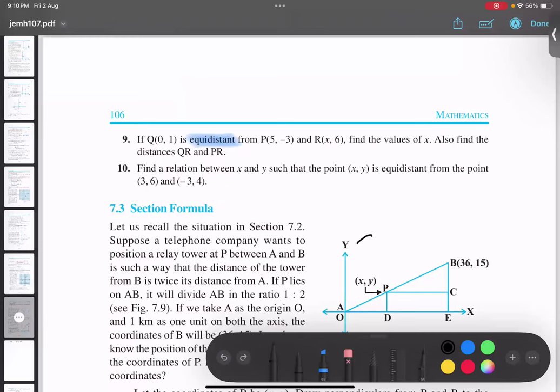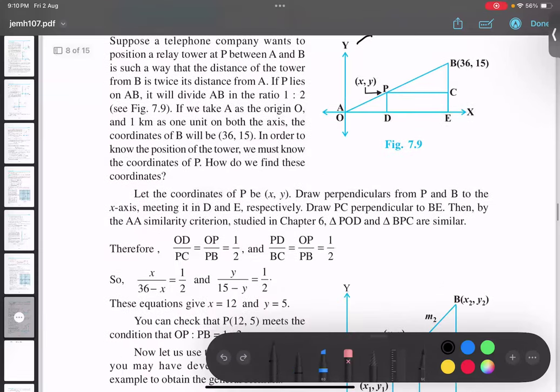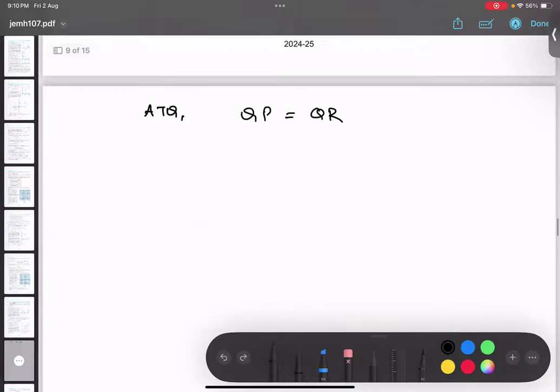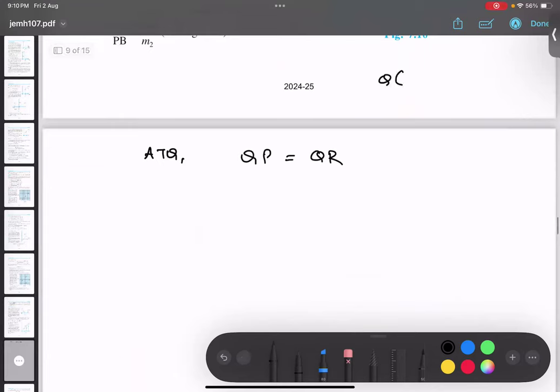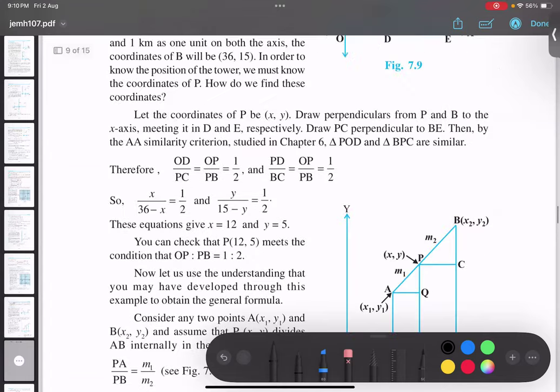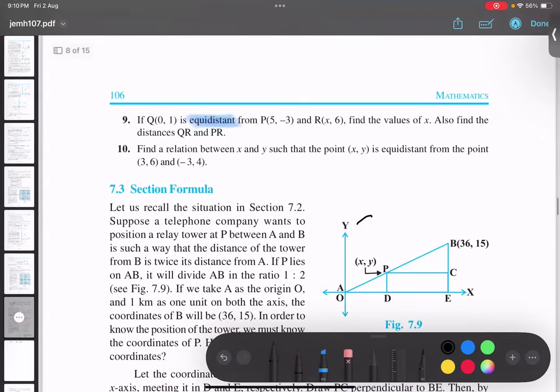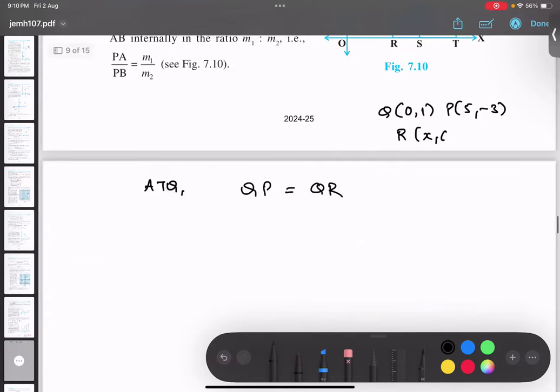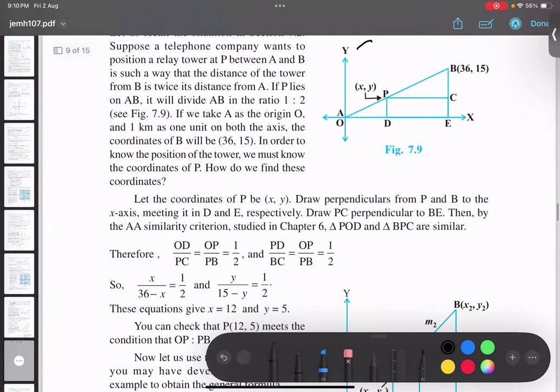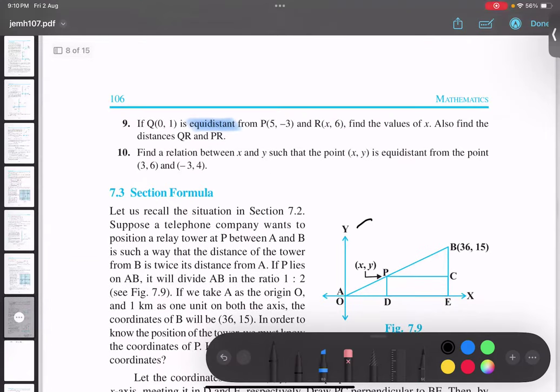So Q is 0,1, P is 5, minus 3. So Q over here is 0,1. P over here is 5, minus 3. And R is what? X comma 6. Now the question is saying find the distance. Find the value of X and find the distance.